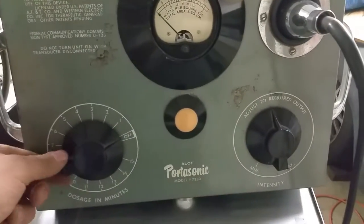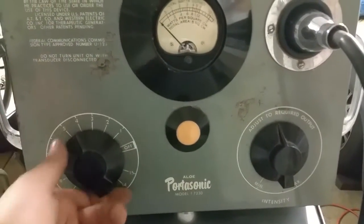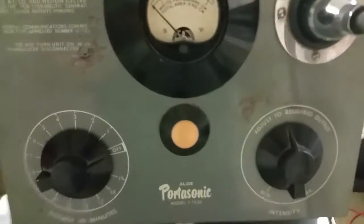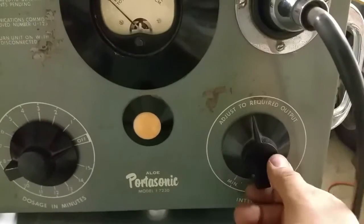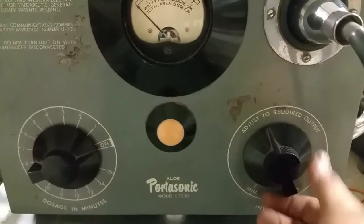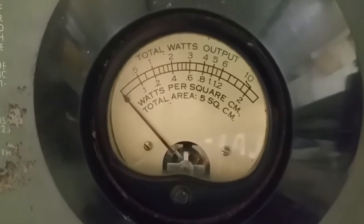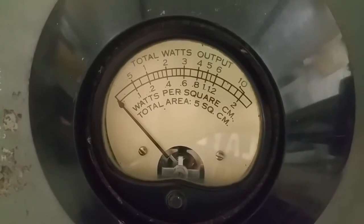So the front of it here you have dosage in minutes which you can set here which is a timer. You have the power light which always looks like it's on. It's very interesting. And then you have your required output. And the interesting thing is the gauge here is total watt output or watts per square centimeter.